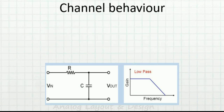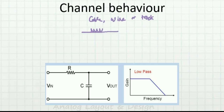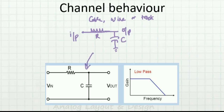Let's understand channel behavior. The channel — some cable, wire, or PCB trace — is copper material that has resistance and also capacitance with respect to ground. So the channel is modeled as an RC filter: C is the capacitance to ground and R is the resistance. The input goes through this RC network to the output.